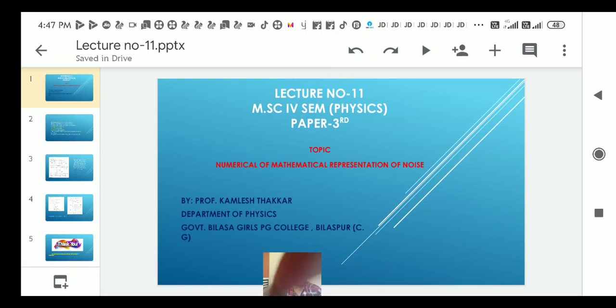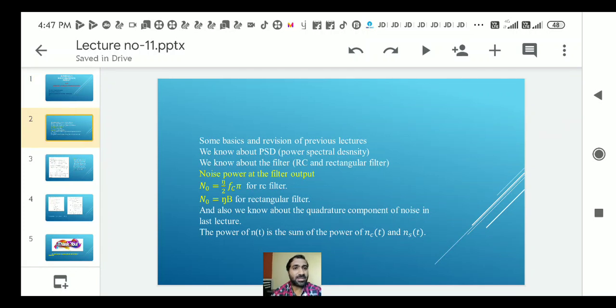First slide covers basics we already know: power spectrum density, RC filter and rectangular filter. We know noise power at RC filter is eta by 2fc pi and noise power for rectangular filter is eta b. We also know about the quadrature component from the last lecture.